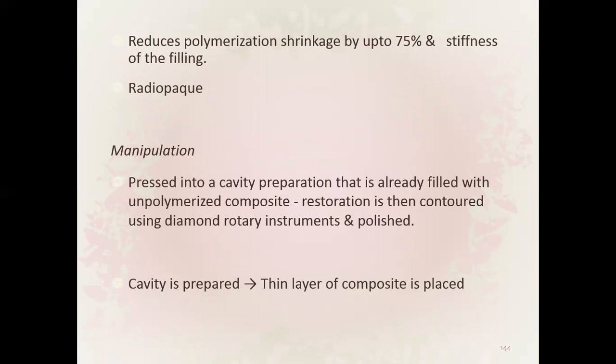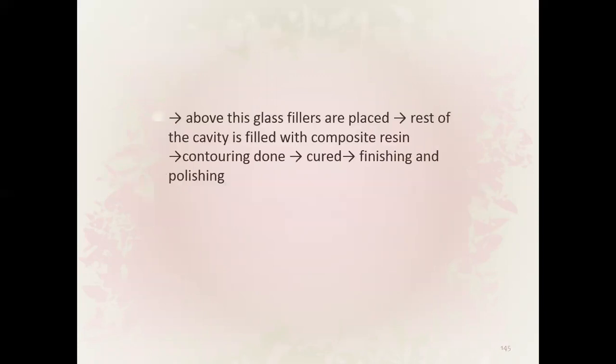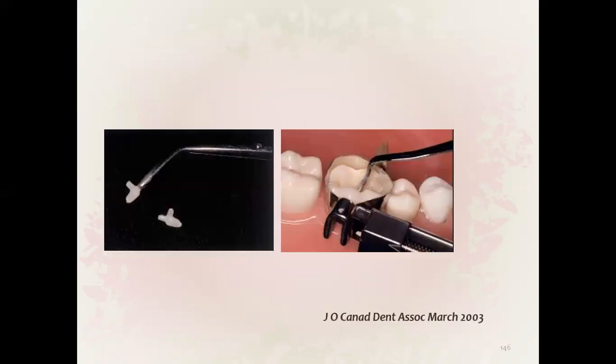Manipulation of composite inserts: the cavity is first filled with unpolymerized composite, the insert is pressed in, the restoration is contoured using a diamond rotary instrument and then polished. A cap is prepared, a thin layer of composite is placed above, glass inserts are placed, the rest of the cap is filled with composite resin, then contouring, curing, finishing, and polishing are completed.